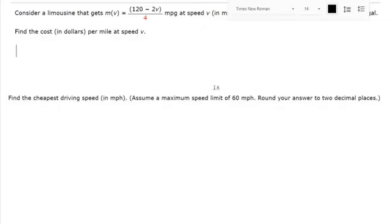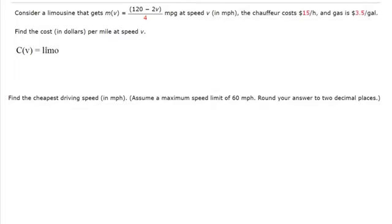There's two things that are costing us money in this problem, and we're asked to find the cost based on velocity. There's two things: there's the chauffeur, and then there is the gallons that we've driven. The cost per gallon, the cost for the gallons, and the cost for the chauffeur.